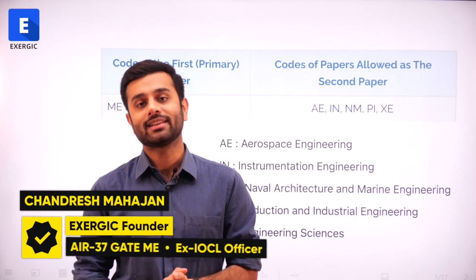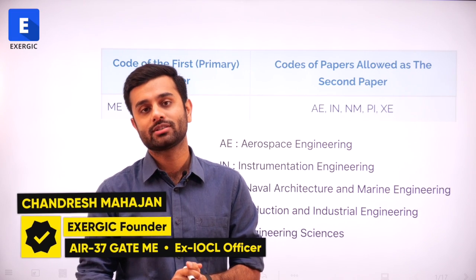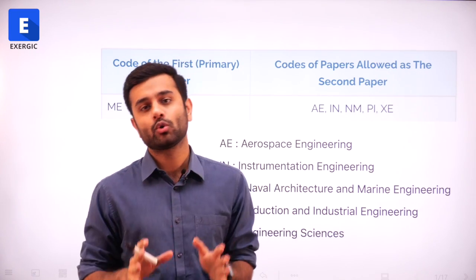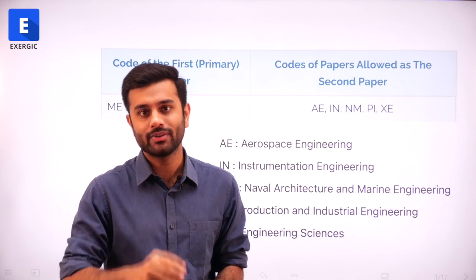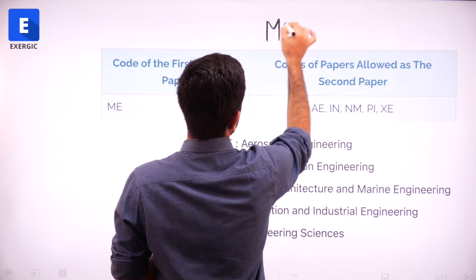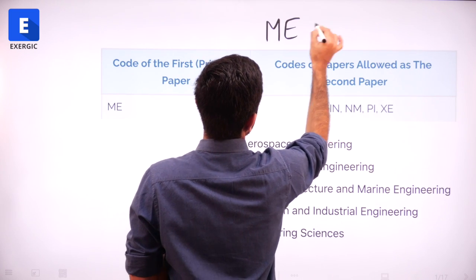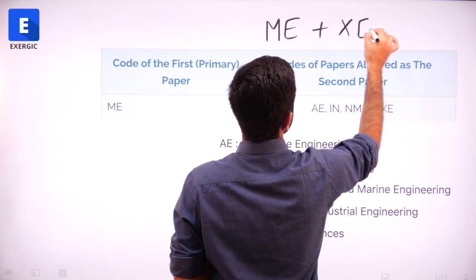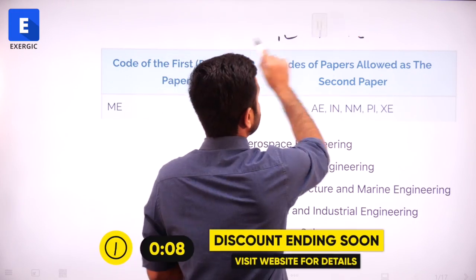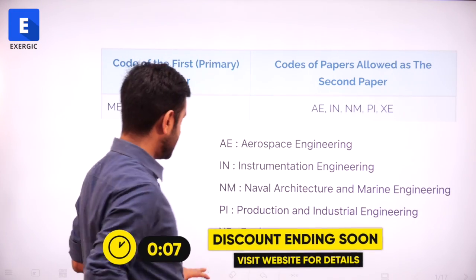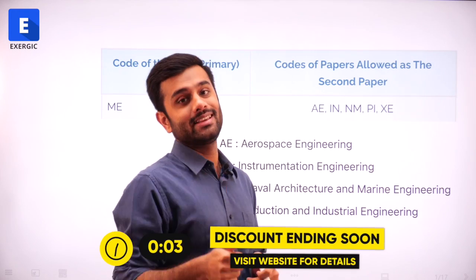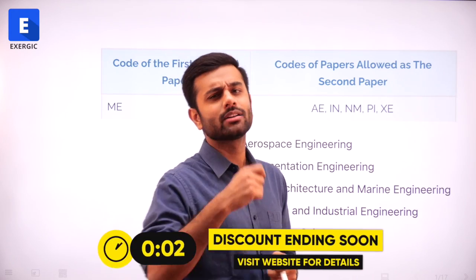By this time you have watched many videos regarding which is the best paper 2 combination with gate mechanical. You have been told that gate mechanical ke saath gate XE is the best paper combination. In this video, we will see whether this claim is true or not, and what are the good options other than XE.